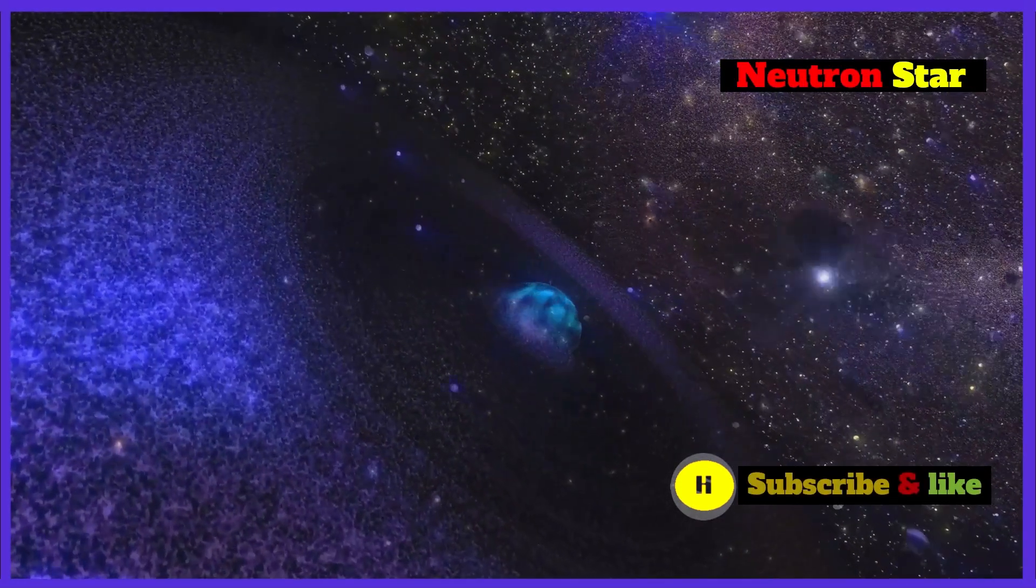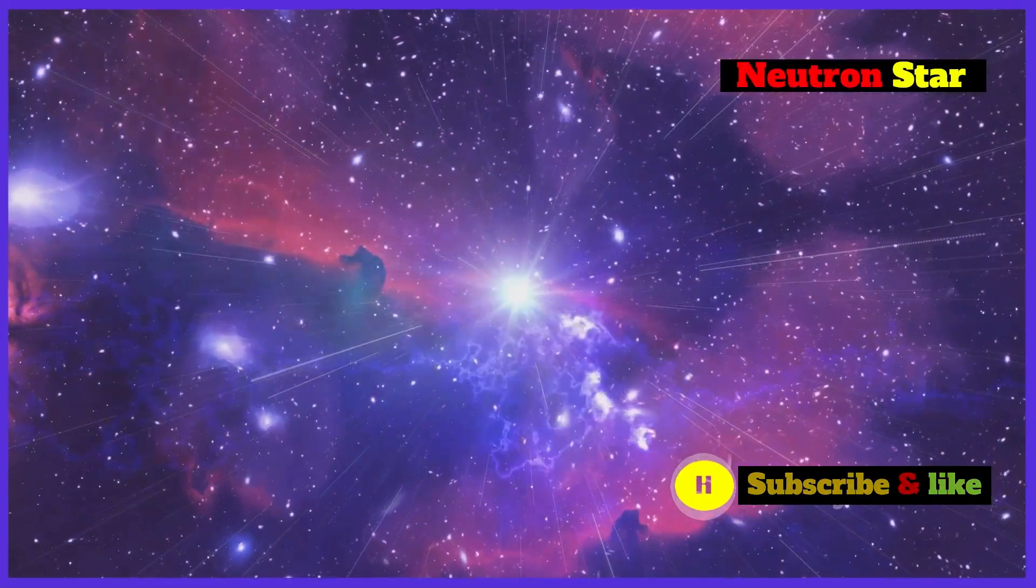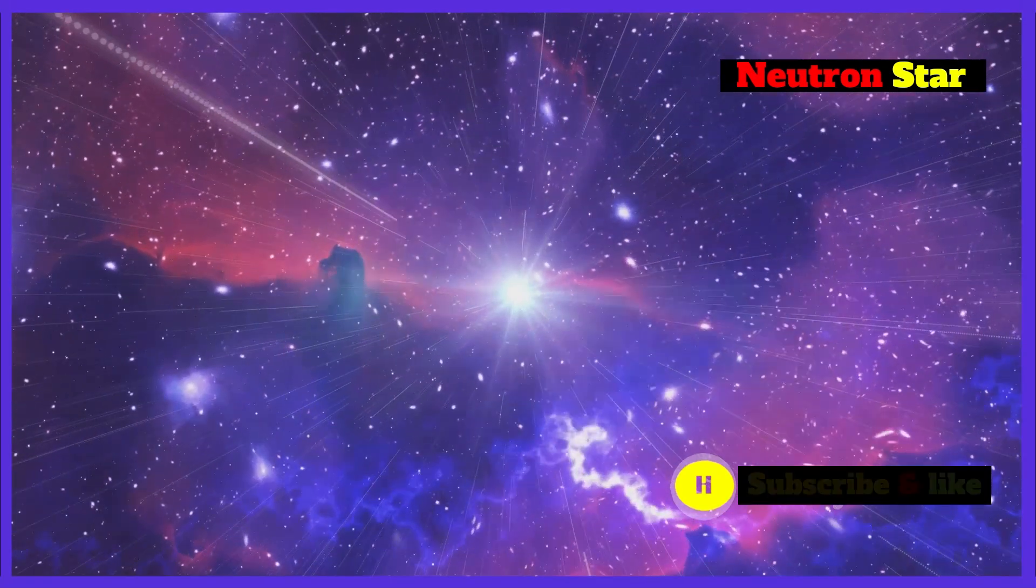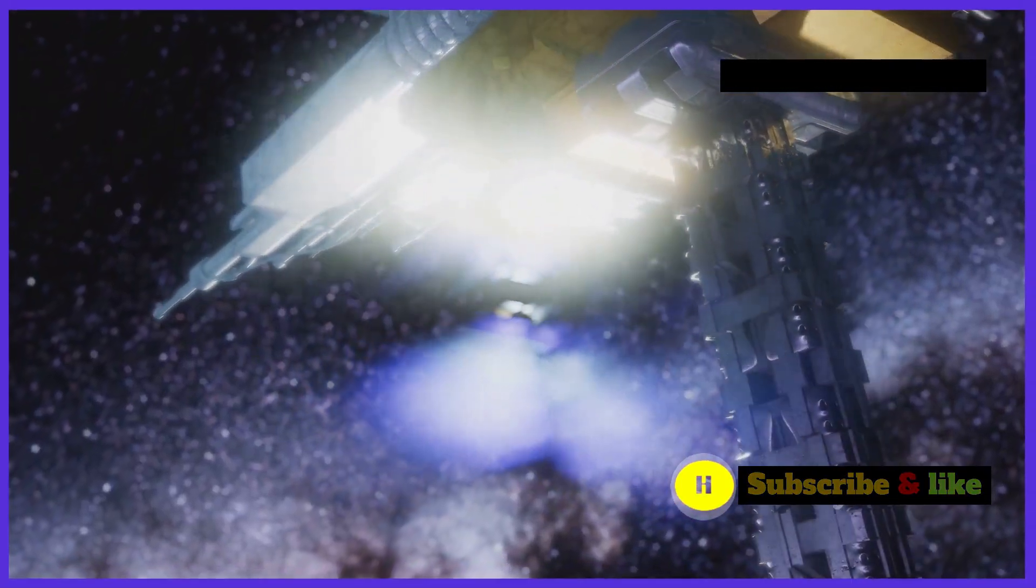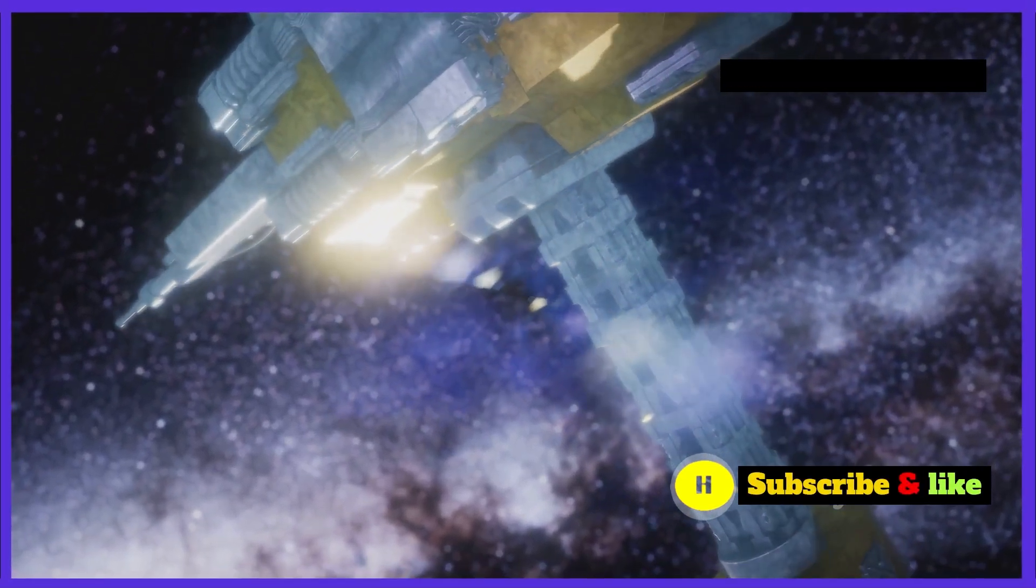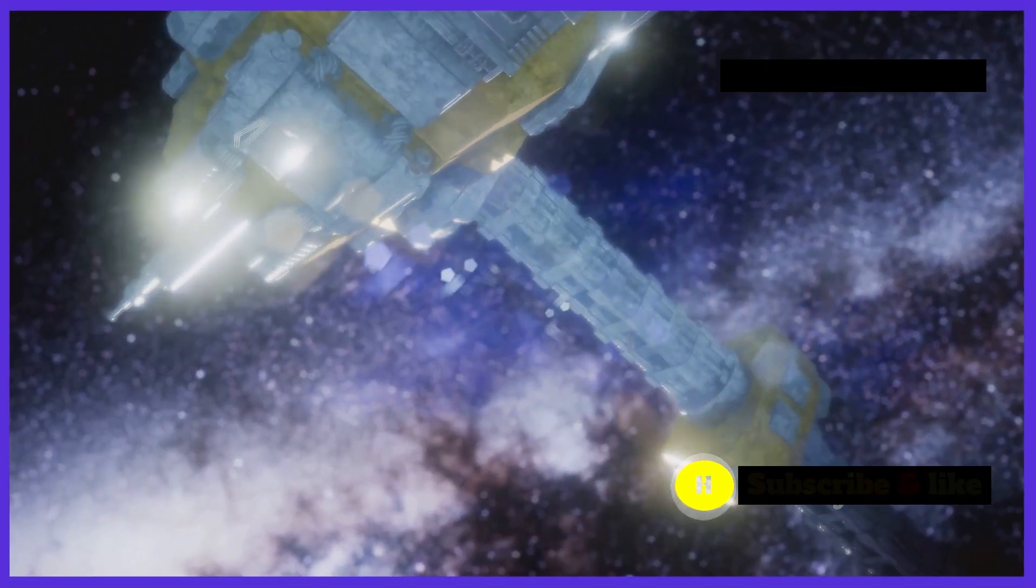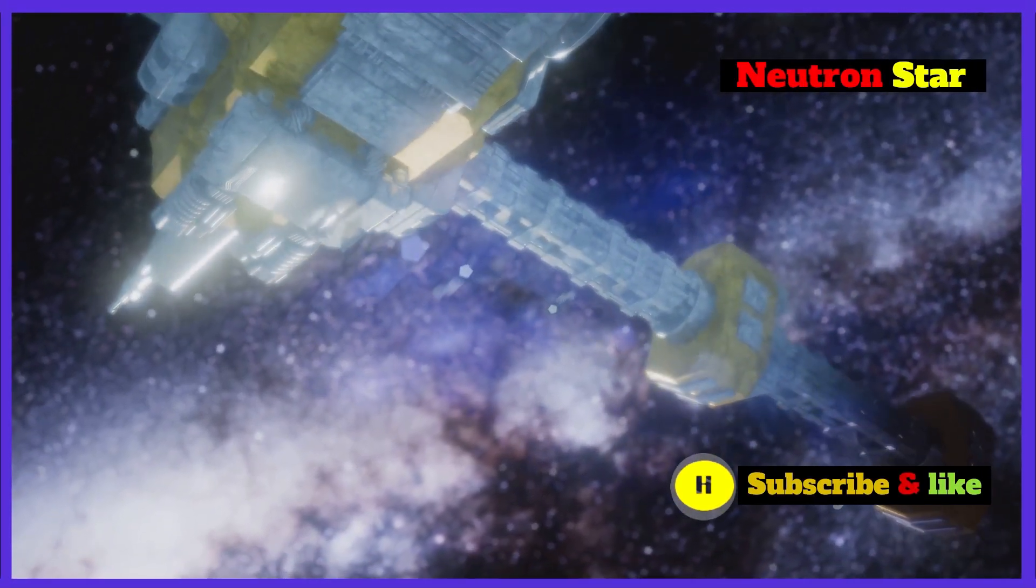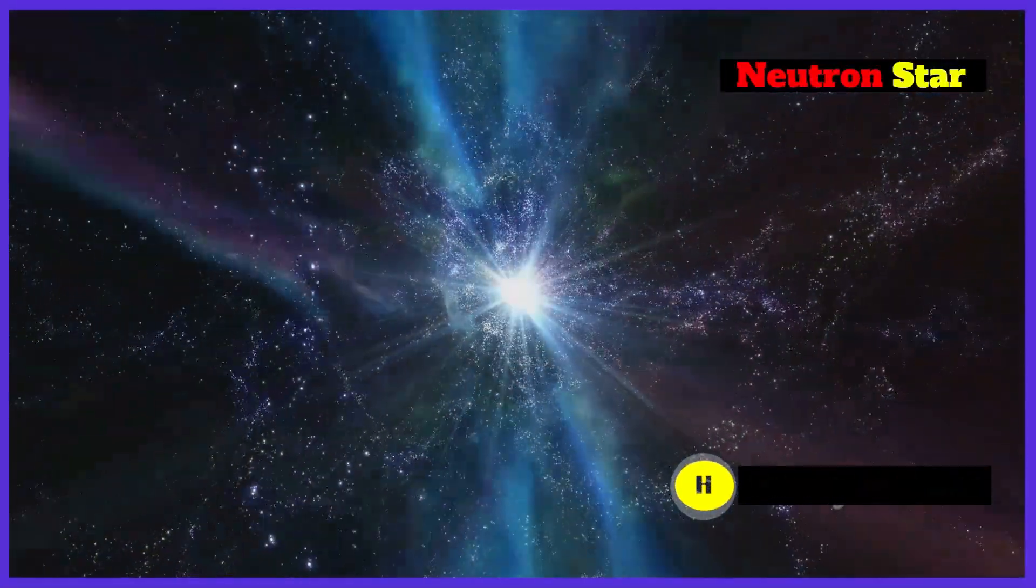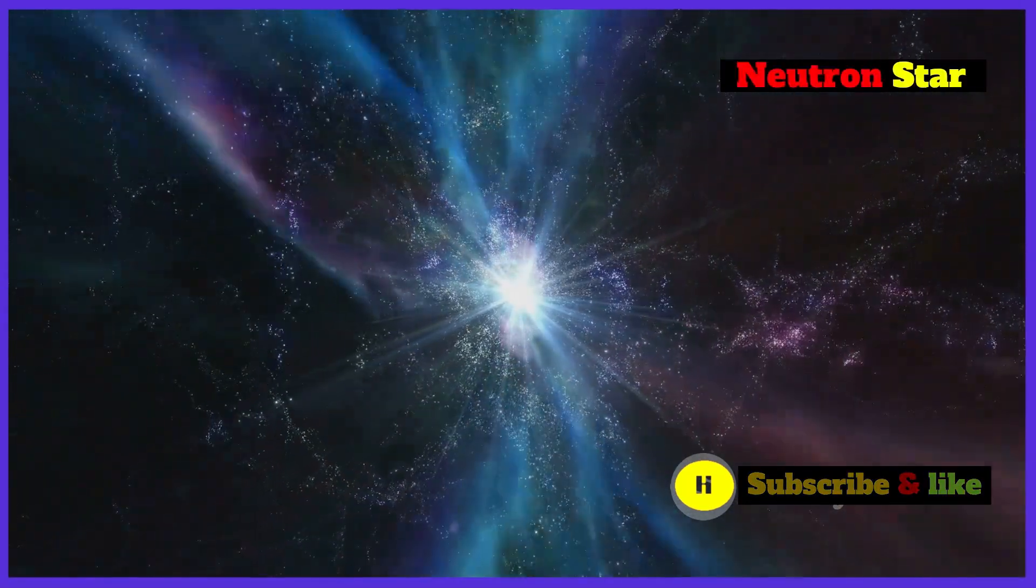Neutron stars are incredibly dense. To put it into perspective, just a sugar-cube-sized amount of neutron star material would weigh about a billion tons on Earth. They are formed when massive stars collapse at the end of their lives. This collapse is so intense that protons and electrons combine to form neutrons, resulting in a star composed almost entirely of neutrons. Imagine squeezing the entire mass of the sun into a city-sized object. This is what makes neutron stars so incredibly dense and fascinating.